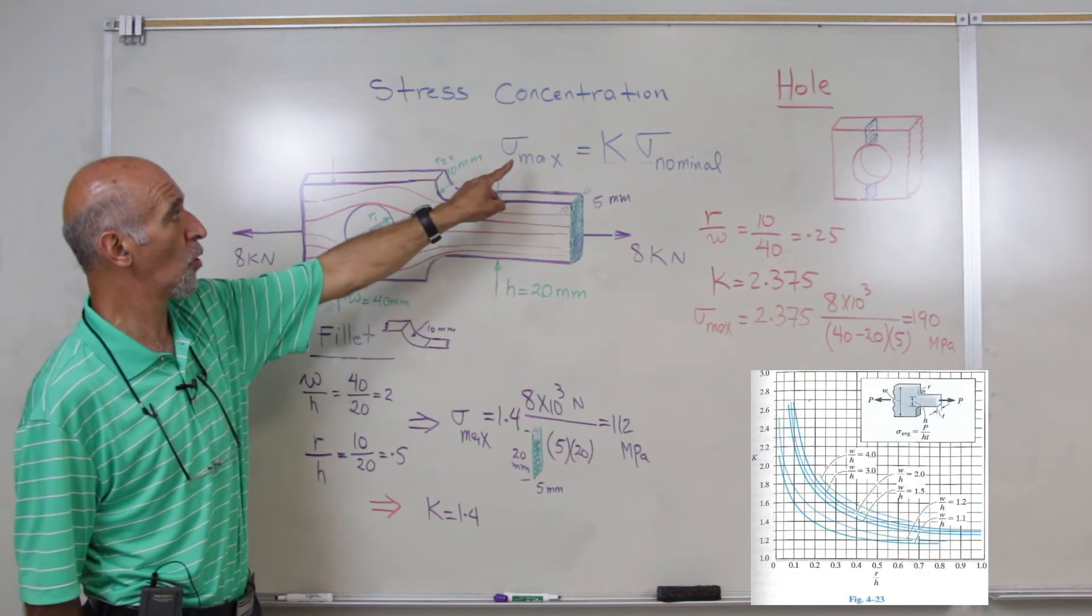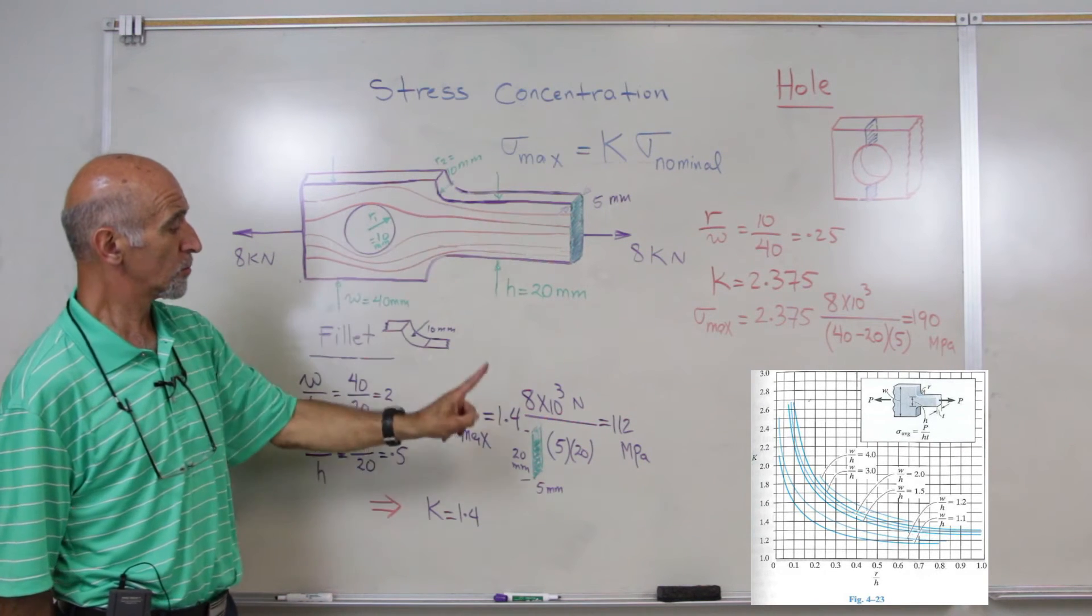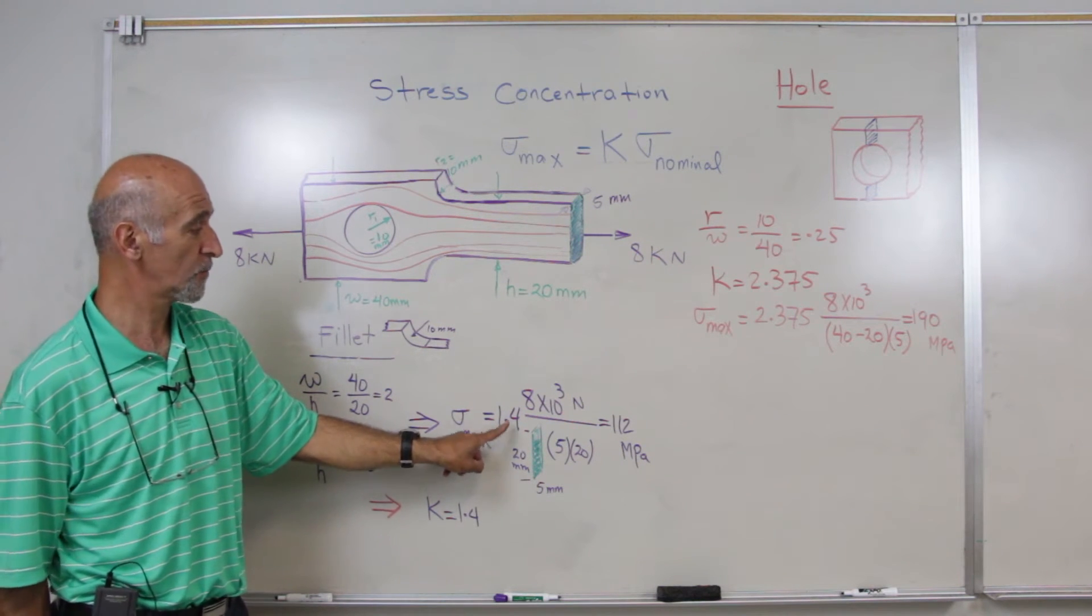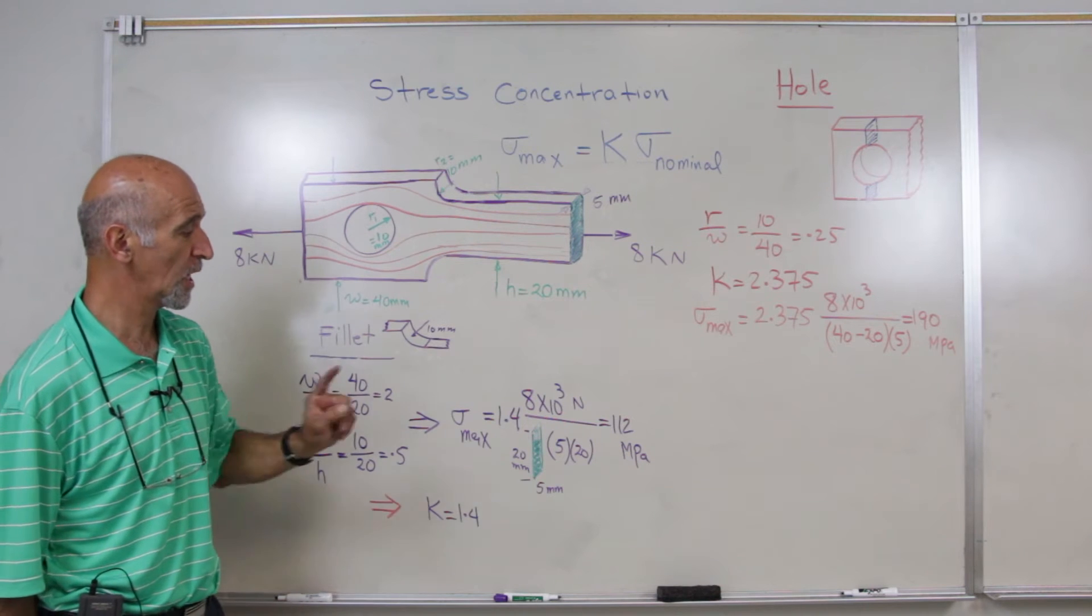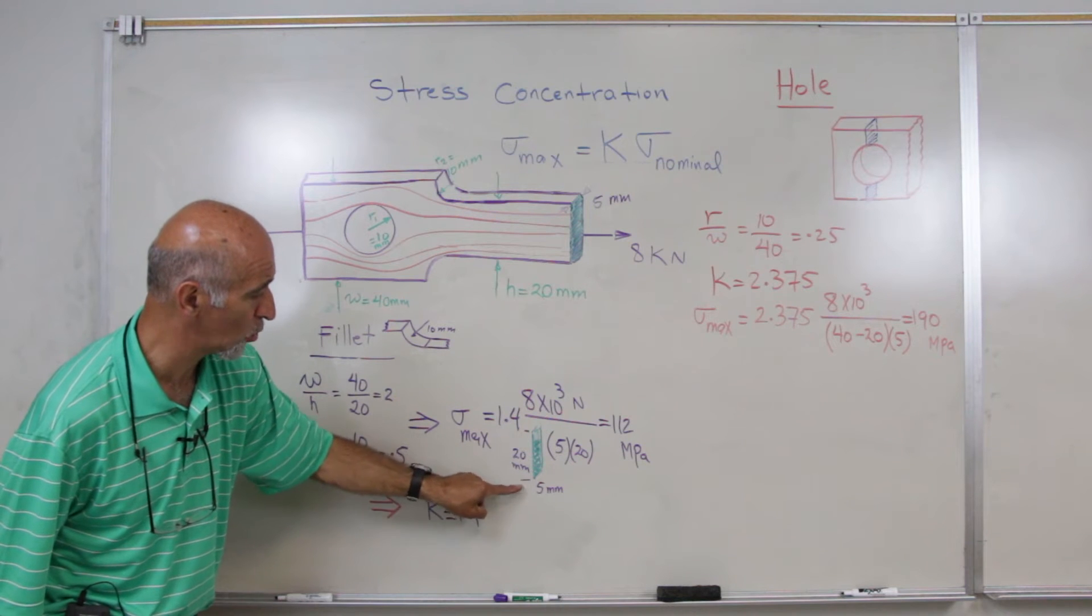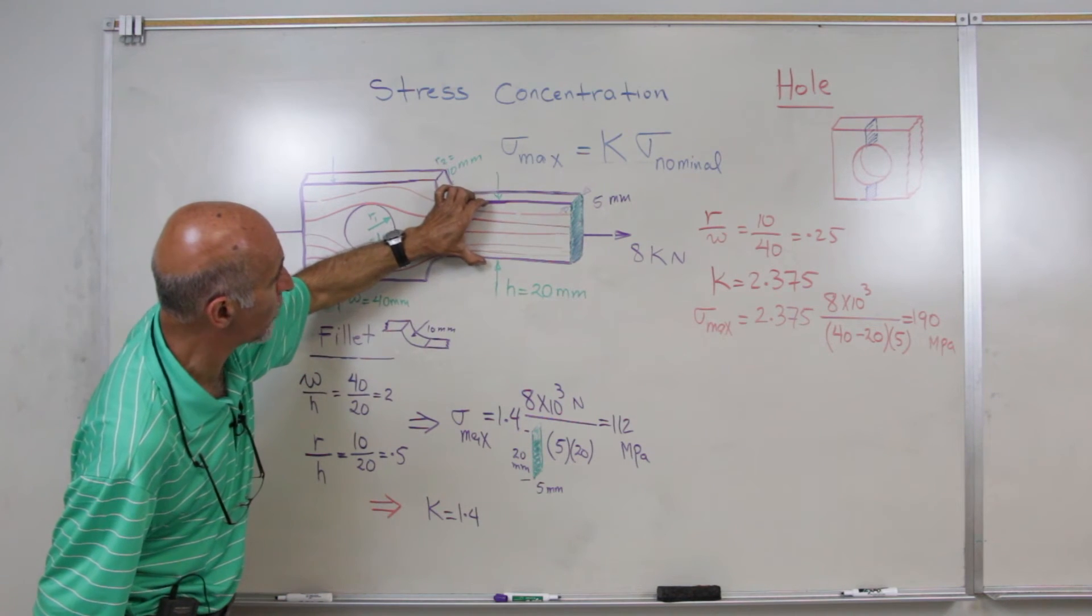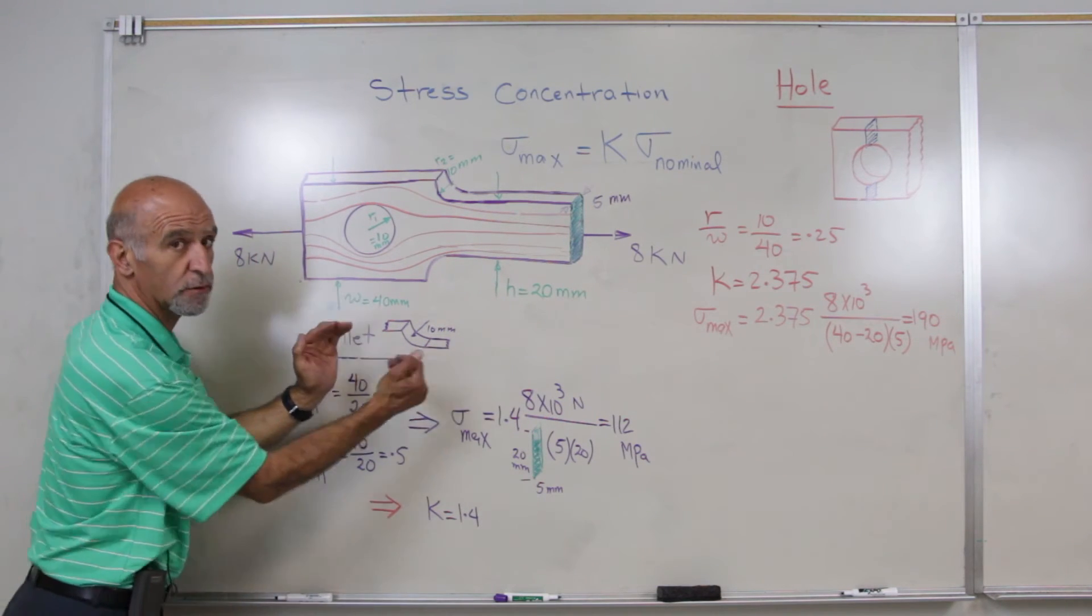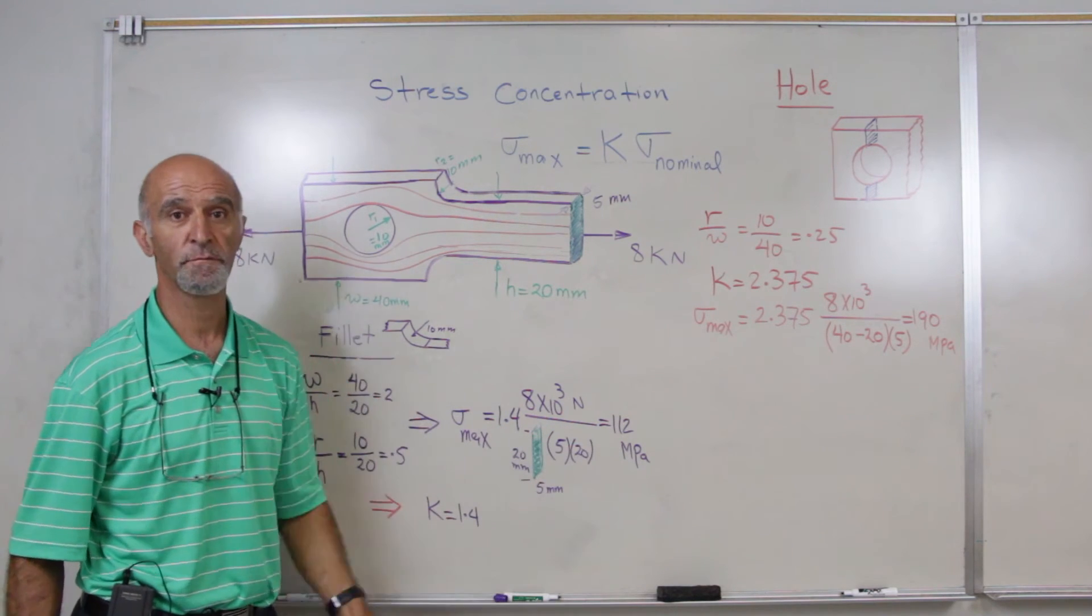Then we will have to go back to this equation to find our maximum stress by taking 1.4 to be the stress concentration factor, 8 times 10 to the power of 3 newton, which is pulling the bar apart, divided by the nominal area. As you see, the nominal area I have shown here is 20 mm by 5 mm, where it's also shown over here. This is the nominal area for the part or the fillet, considering the fillet for the stress concentration. That number comes out to be 112 MPa.